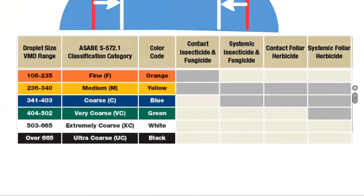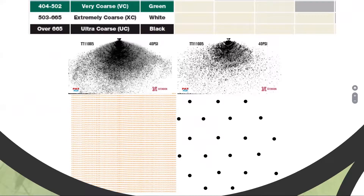Swath width on a boomless sprayer is also very closely tied to droplet size. Each chemistry is going to work most effectively at a particular droplet size based on the coverage it requires. A systemic chemistry like Grazon can go out with a much larger droplet because it's systemic. Most contact insecticides require a much smaller droplet, and that smaller droplet provides much higher coverage. These are mathematical representations — assuming all droplets are the exact same size and 100% reached their intended target — which we know isn't accurate, but we need those assumptions to do the math.